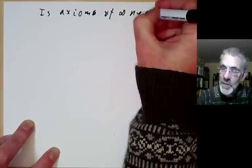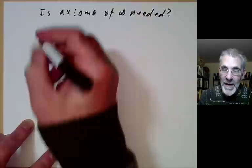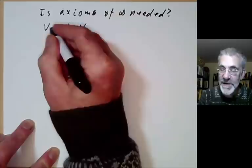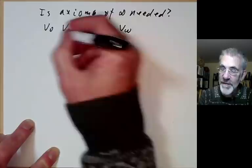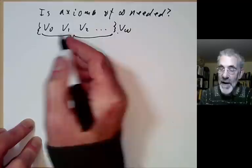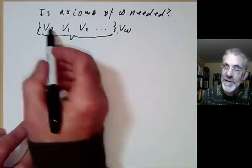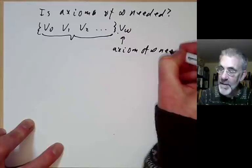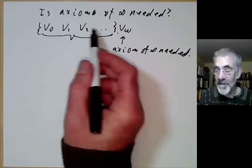Next we can ask: is the axiom of infinity needed? What happens if you drop the axiom of infinity? There is one point at which you need it. If you're looking at the von Neumann hierarchy — V0 is the empty set, V1 is the power set of V0, and so on — and you want to take the union of them to get Vω, you need to somehow form V0, V1, and so on into a set. You can get this set if you apply the axiom of replacement to an infinite set, but you need an infinite set to start with. So the axiom of infinity is needed in order to take the union of all the Vα for finite α.